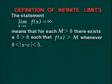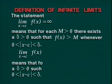The statement, limit of F as x approaches C is infinity, means that for each M > 0, there exists a δ > 0 such that F(x) > M whenever the absolute value of x - C lies between 0 and δ. Similarly,